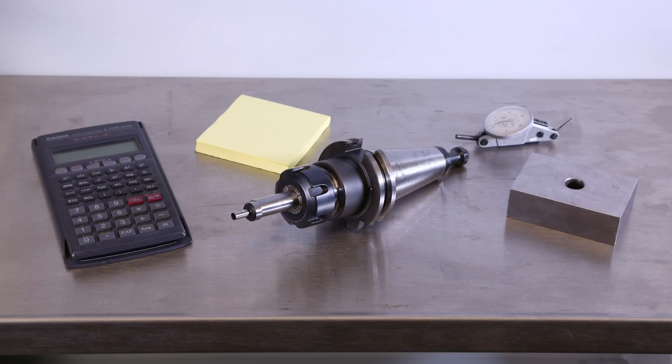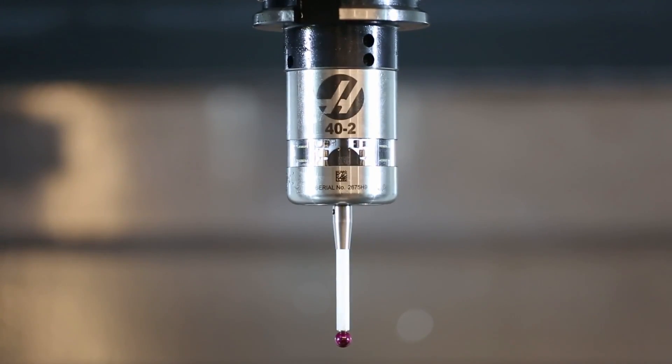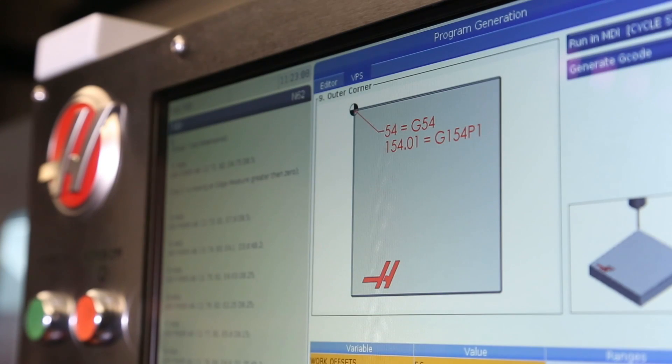We won't need these anymore. You just need this and this. Jog down to the part, select the probing routine, and press Cycle Start.